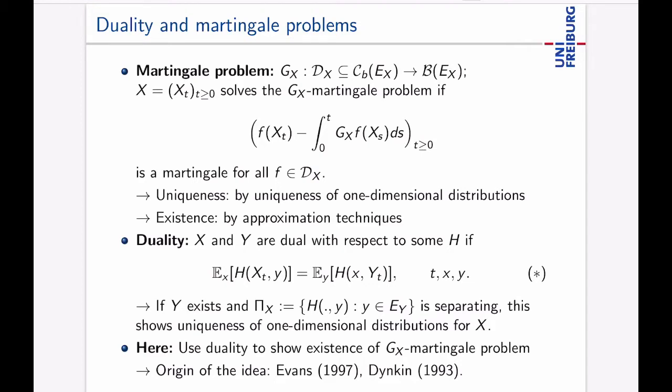And how comes duality into play here? As follows: X and Y are dual processes, dual Markov processes, if the following holds. So on the left here you have an expectation with respect to Xt, on the right here you have an expectation with respect to Yt and these here should match for some function H.